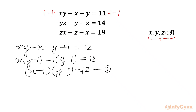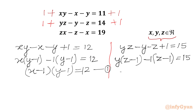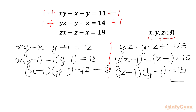Now I will add 1 to our second equation on both sides. LHS will become YZ minus Y minus Z plus 1, and RHS will be equal to 15. Again we can take Y common from the first two terms, getting Z minus 1 in the bracket, and minus 1 common from the last two terms, also giving Z minus 1 in the bracket. Now we can take Z minus 1 common out, so in the other bracket we get Y minus 1. This gives us Y minus 1 times Z minus 1 equal to 15, and this equation we will call equation number 2.